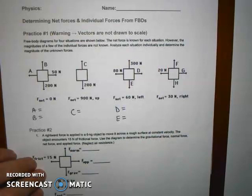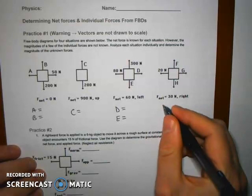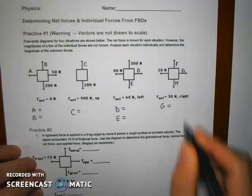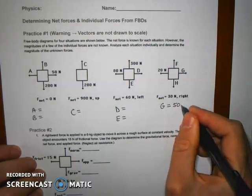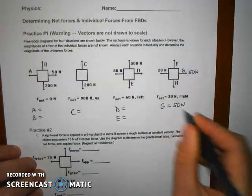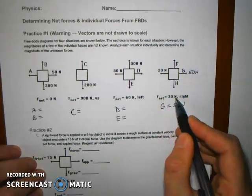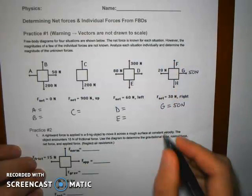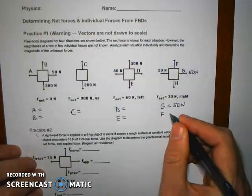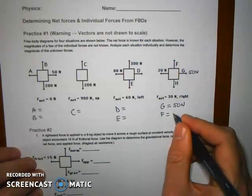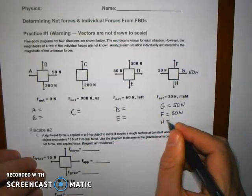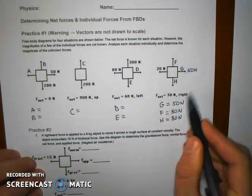The last situation is a little different because they don't give you a whole lot of information — they just tell you the net force is 30 newtons to the right. That means you can figure out G immediately. G would have to be 50 newtons, because if you have 50 newtons acting to the right, then 50 minus 20 are unbalanced, which gives you 30 newtons more in the right direction — that's the net force. So F and H just have to be equal, whatever they might be. If F is 80 newtons going up, then H has to be that exact same amount going down because they're canceling out, so the net force is only acting to the right.